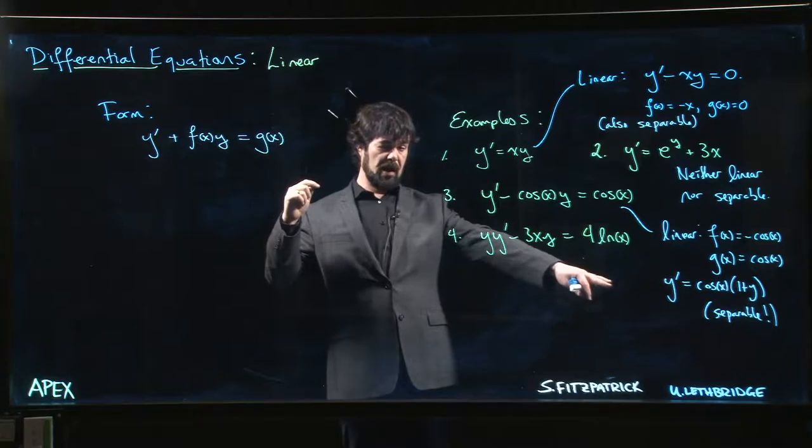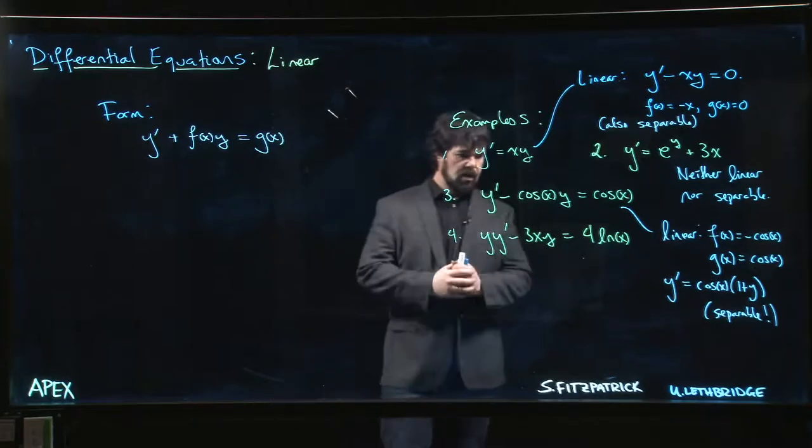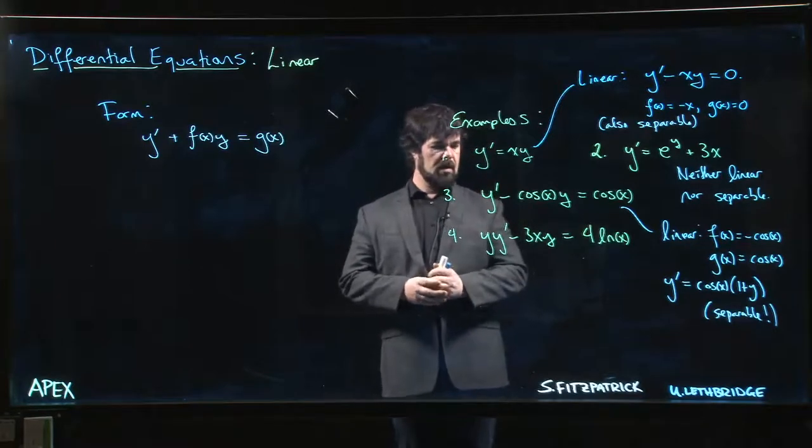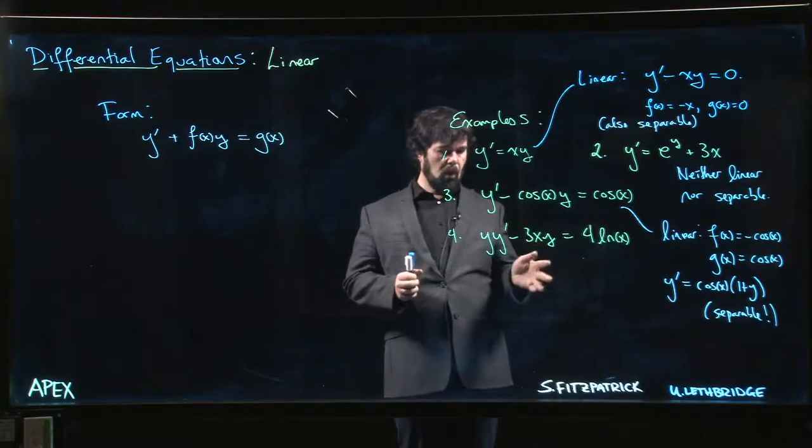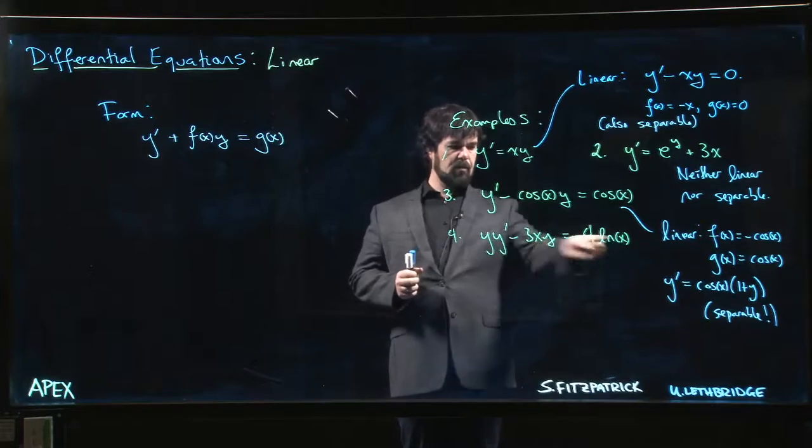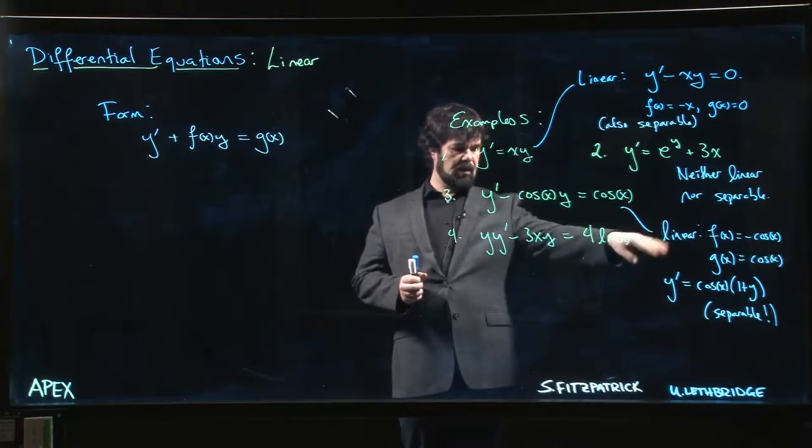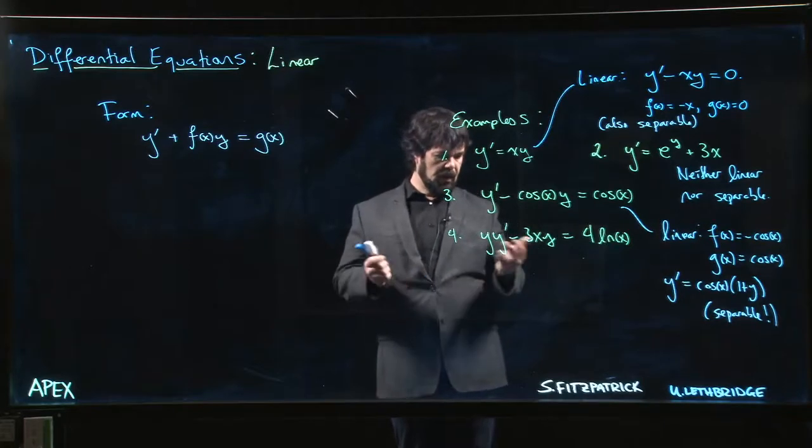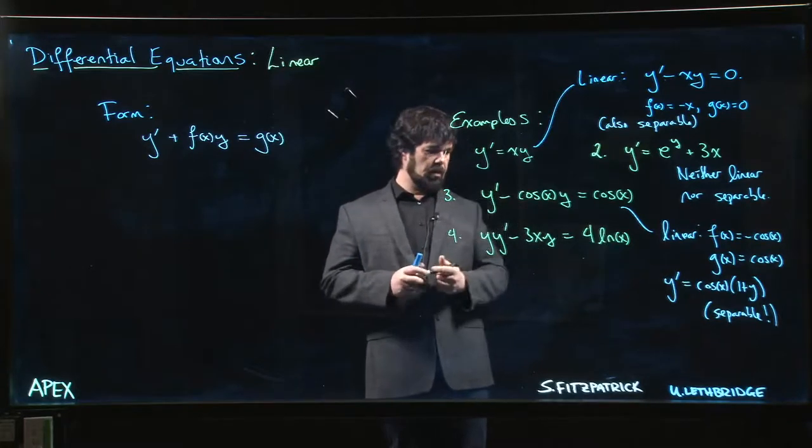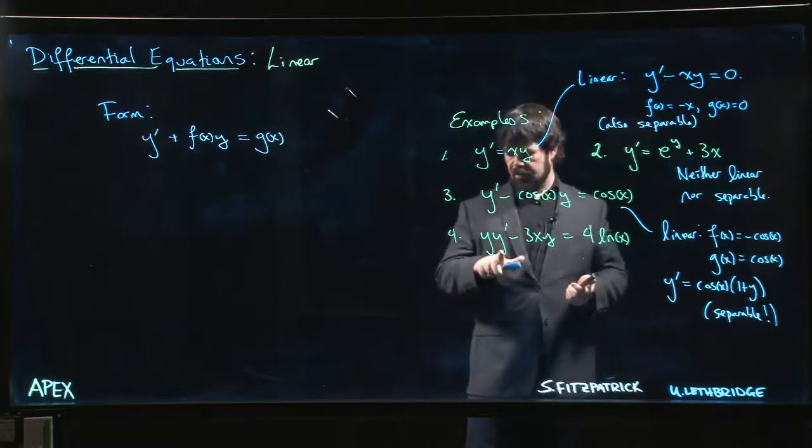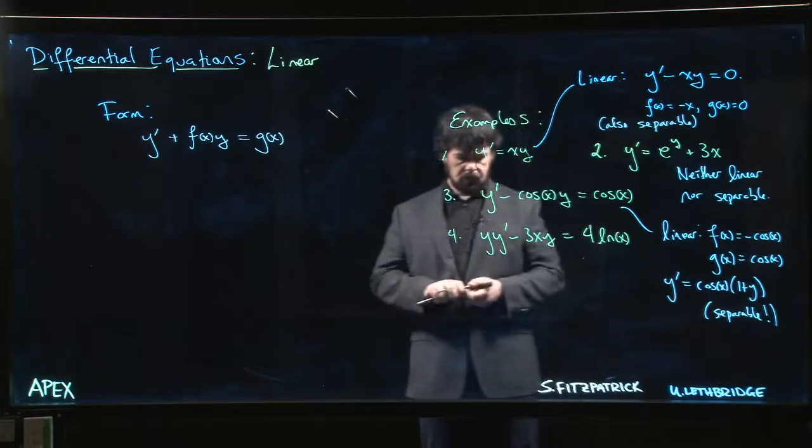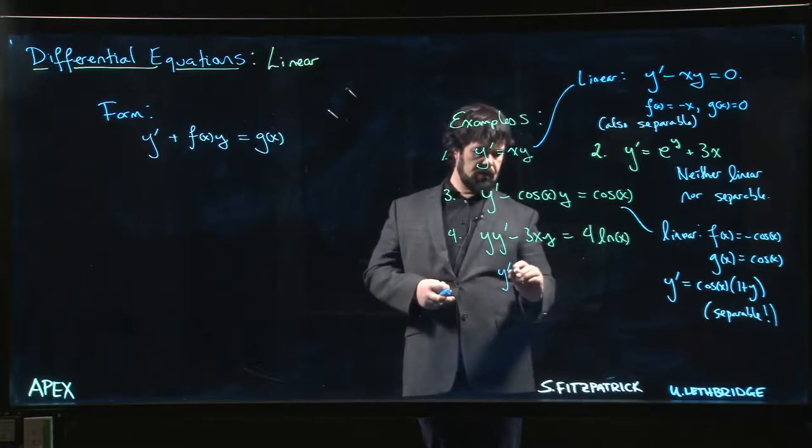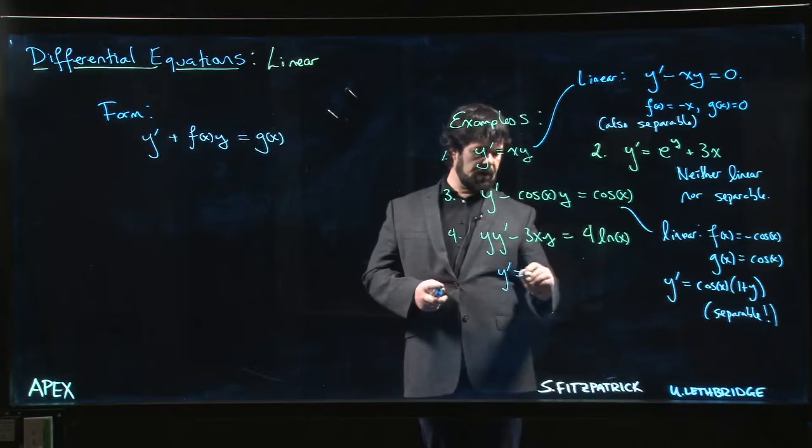This last one, it's not going to be separable or linear. We move that over, we've got a sum—a function of x, something that depends on x and y, and there's still this y over here in front of the y prime. This is not going to be separable, it's not going to be linear. If you try to isolate y prime, you could divide through by y. Y prime is equal to, so if we rearrange this...